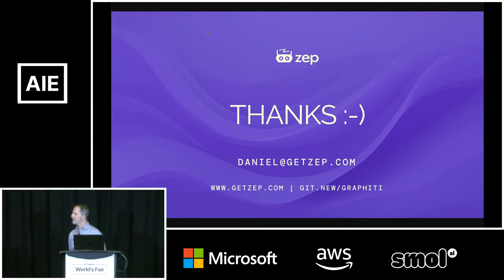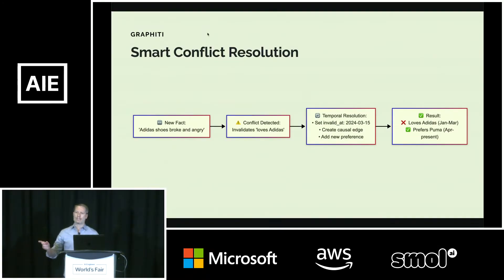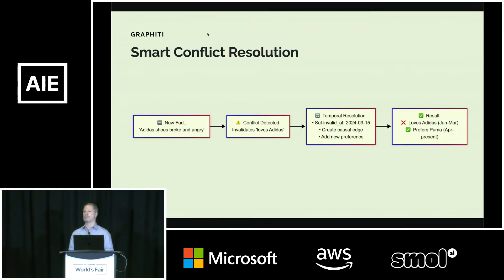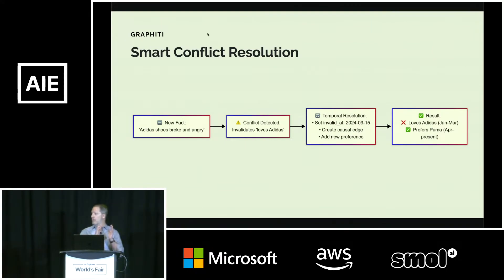How do you invalidate the other graph edge — are you using LLMs or something else? Graphiti makes extensive use of LLMs to intelligently parse incoming data, which could be unstructured or structured — unstructured conversations, emails, or structured data in JSON format — and fuse it together on the graph. As part of integrating, we use LLMs in a pipeline to identify conflicting facts. That's where we get the ability to go from broken shoes to disappointment to a switch in brand preferences. The LLM is able to understand the emotional valence of the events it is seeing.